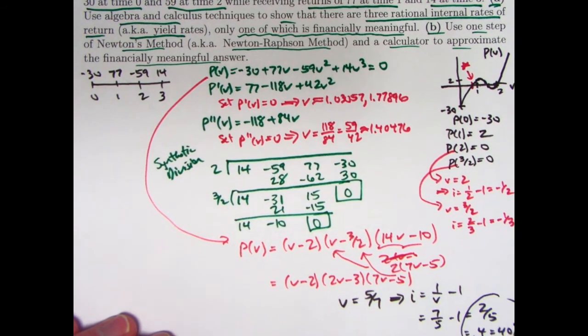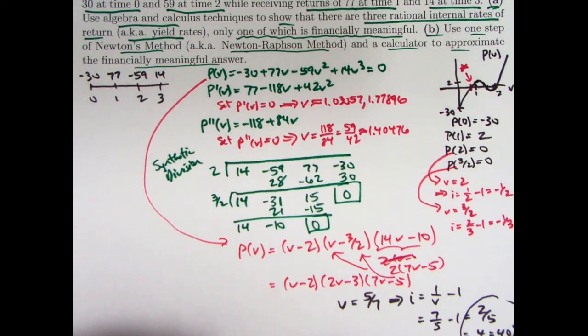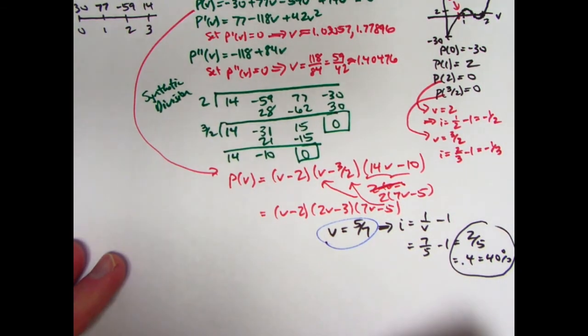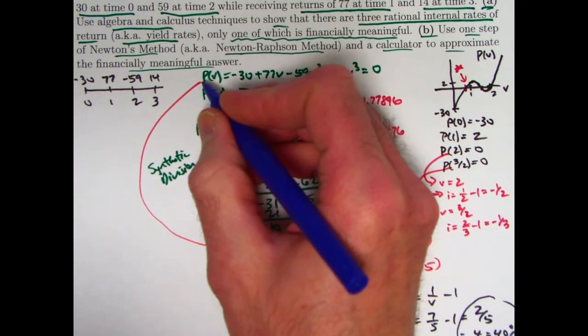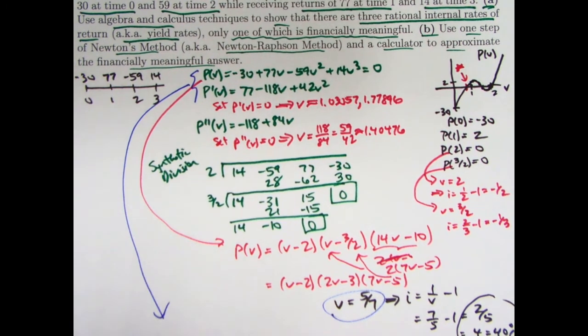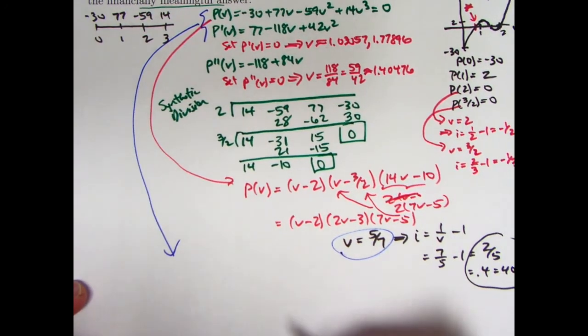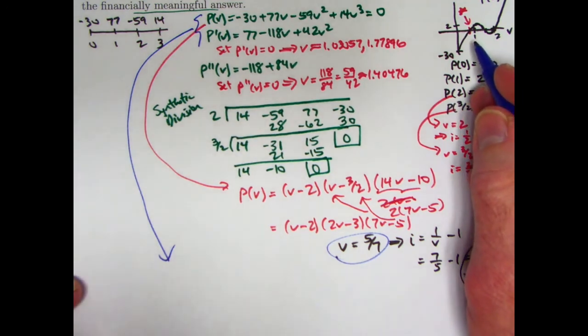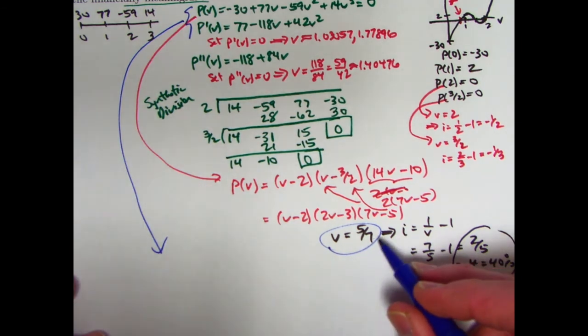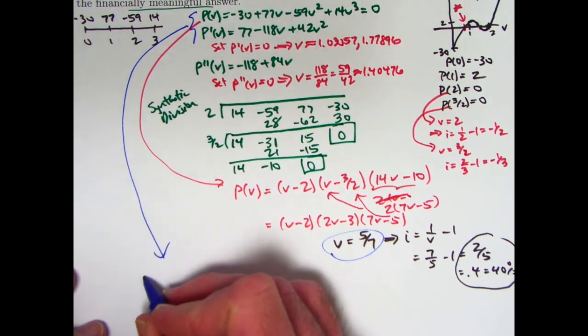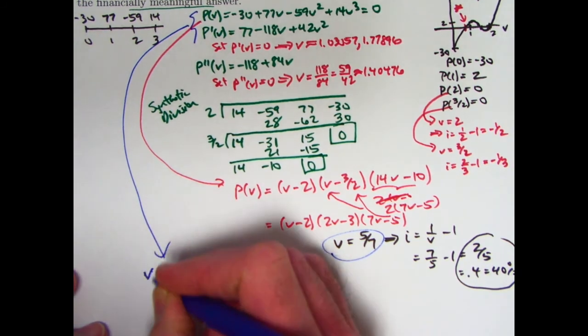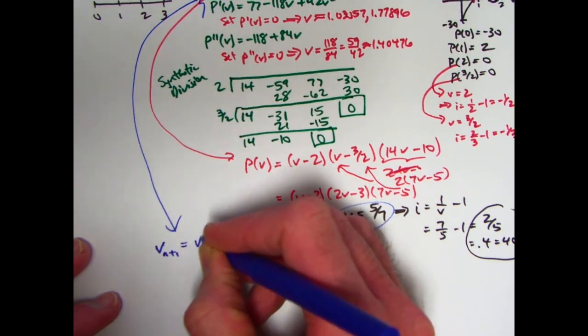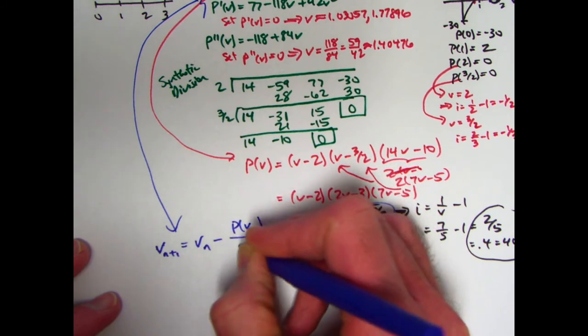The other ones, v equals 2 and v equals 3 halves correspond to i's that are negative. v equals 2 implies i is 1 half minus 1 is negative 1 half. And v equals 3 halves gives i equals 2 thirds minus 1 is negative 1 third. Which of these does the financial functions on the calculator give? I don't know. Let's go ahead and see. You might hope it would give you the financially meaningful one, but maybe it doesn't. Let's see here. Go to my CF, turn it on first, cash flow, second clear work.